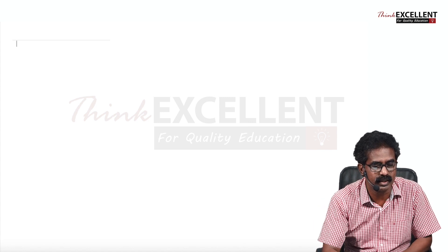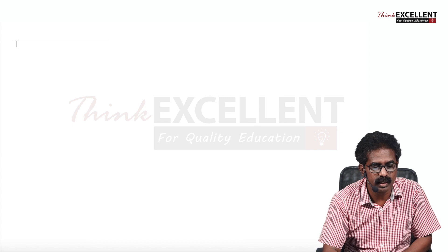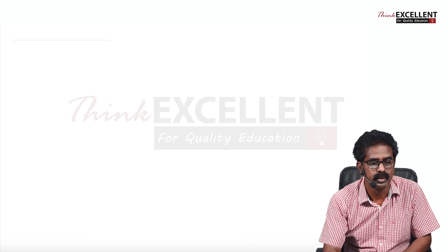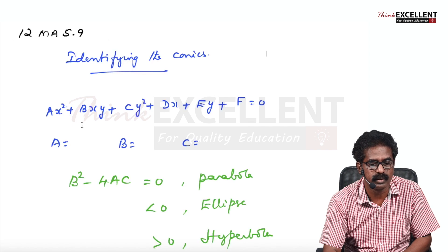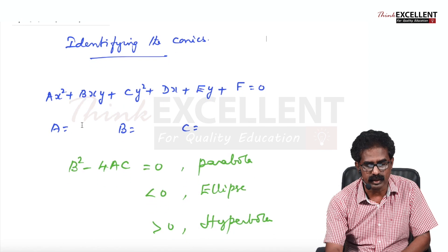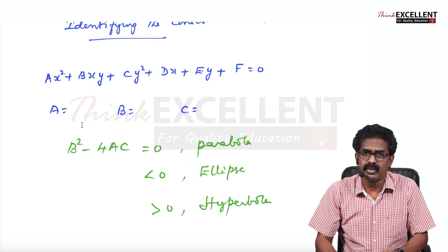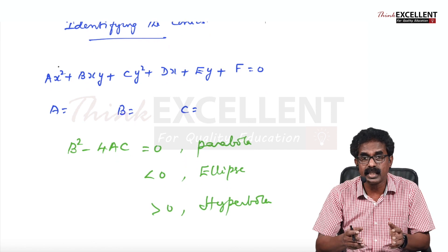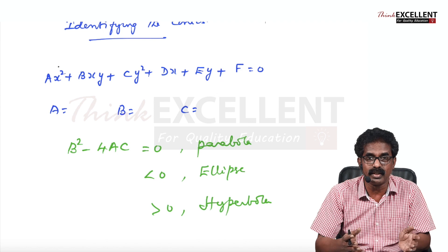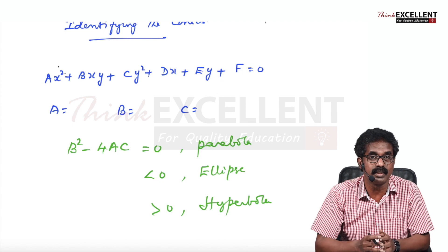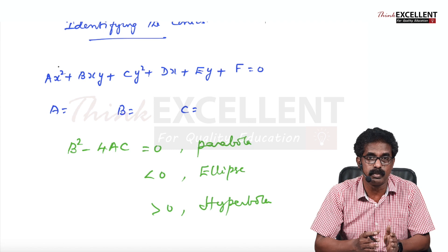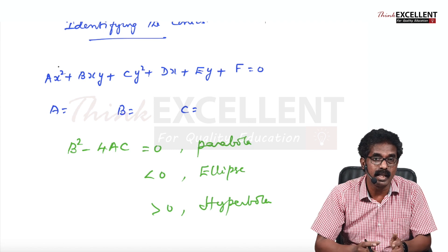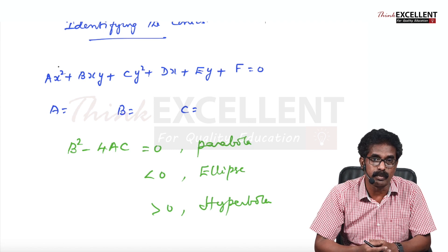Let us start with identifying the conic — how to identify what type of conic it is. This we already studied. If you know the eccentricity, you know how to identify: when eccentricity equals one, parabola; less than one (between zero and one), ellipse; and more than one, hyperbola.